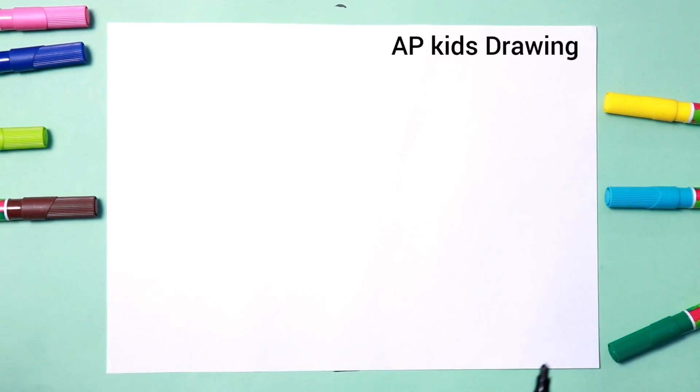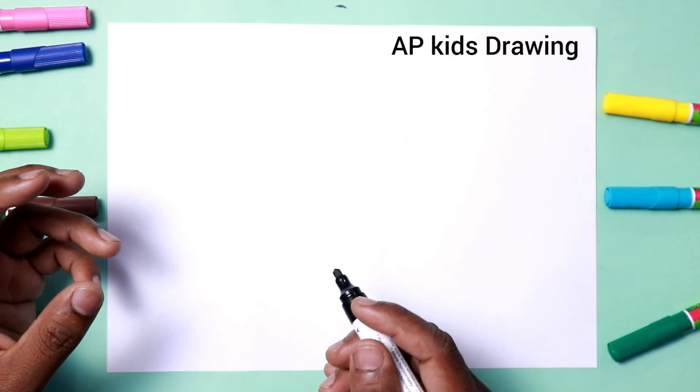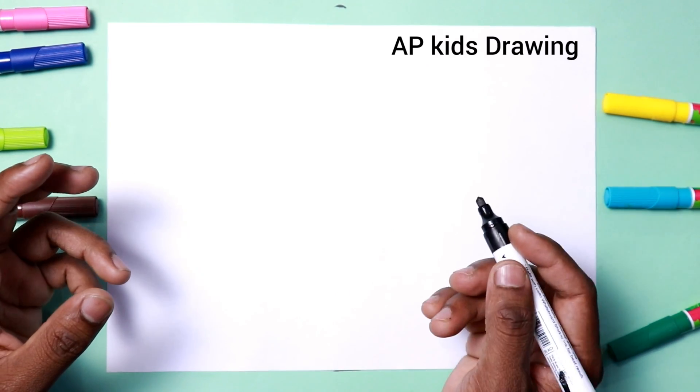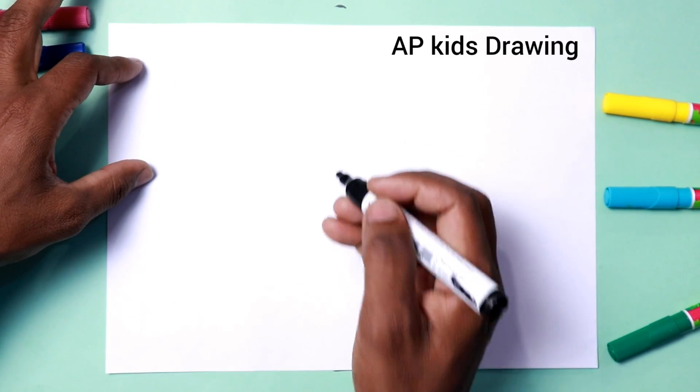Hello Children, myself Ape Pratap and you are watching AP Kids Drawing. Hello Children, today we are drawing a bird from number 5, step by step.